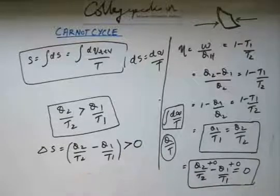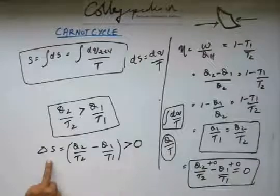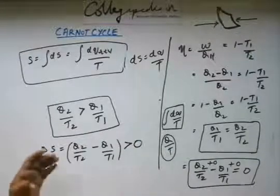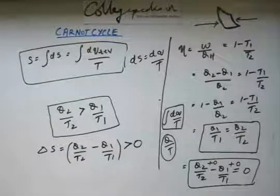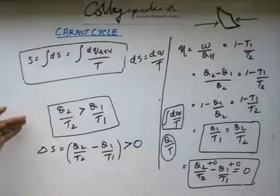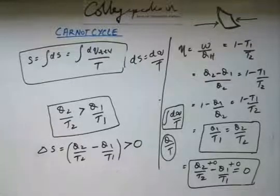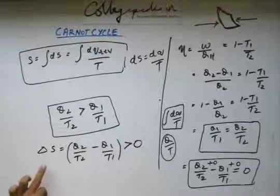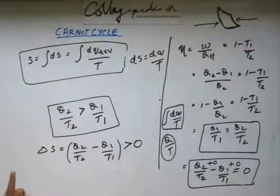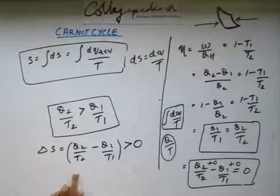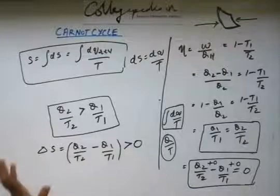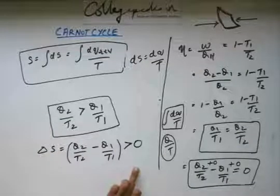Delta S for real processes will be greater than 0. This we can come to know from the analysis of Carnot cycle and using the Carnot theorem that the efficiency of a real engine will be lesser than that of efficiency of Carnot heat engine. The entropy of the whole system is going to be greater than 0.